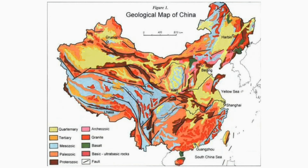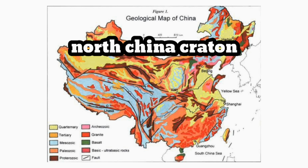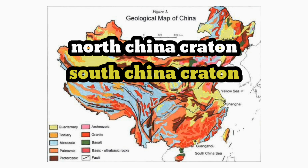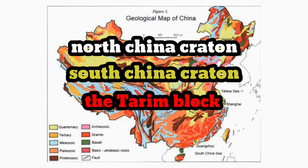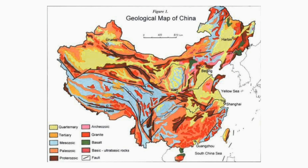The geology of China consists of three Precambrian Cratons surrounded by a number of orogenic belts. The three Precambrian Cratons are the North China Craton, South China Craton, and the Tarim Block. The modern tectonic environment is dominated by the continued collision of India with the rest of Asia, starting 40 to 50 million years ago, which formed the Himalayas and continues to deform most of China.